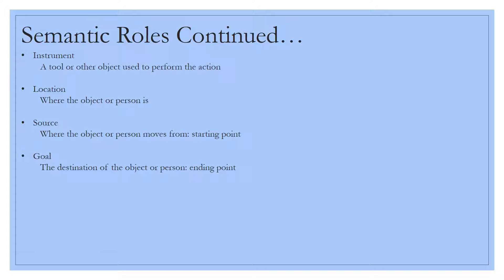Continuing on with semantic rules, we also have instruments within certain sentences, which would be a tool or another object used to perform the action. For example, you could use the sentence: After the hurricanes, all you heard were chainsaws cutting down the trees. The chainsaw would be your instrument. Next, we have location, which is pretty obvious and self-explanatory. It's where the object, the person, the entity is, where they are located. That girl is standing under the tree. There is her location.